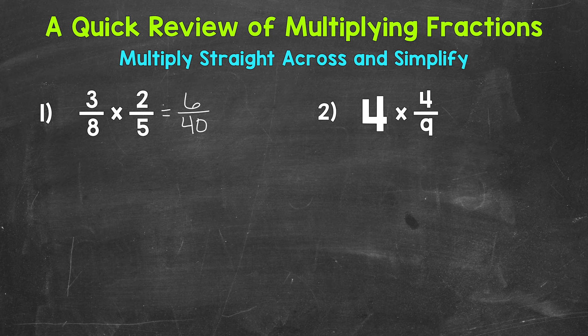6 and 40 have a common factor other than 1 that we can divide both our numerator and denominator by. We can divide both of these by 2. 2 is our greatest common factor. So, let's divide both of these by 2. And we get 6 divided by 2 is 3, 40 divided by 2 is 20. So, our final simplified answer is 3 twentieths.